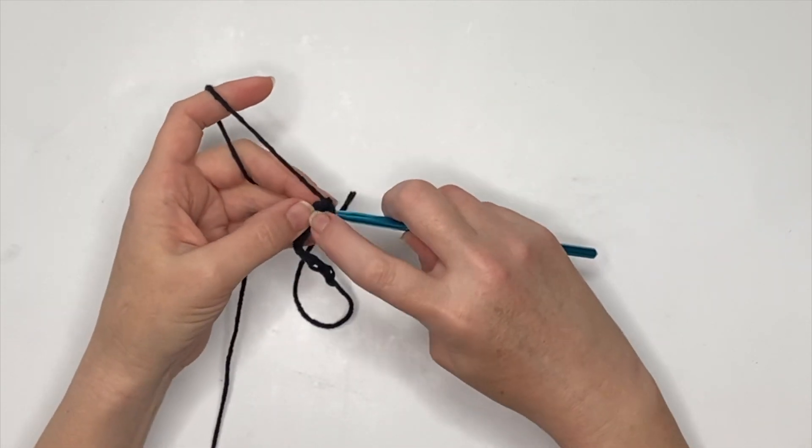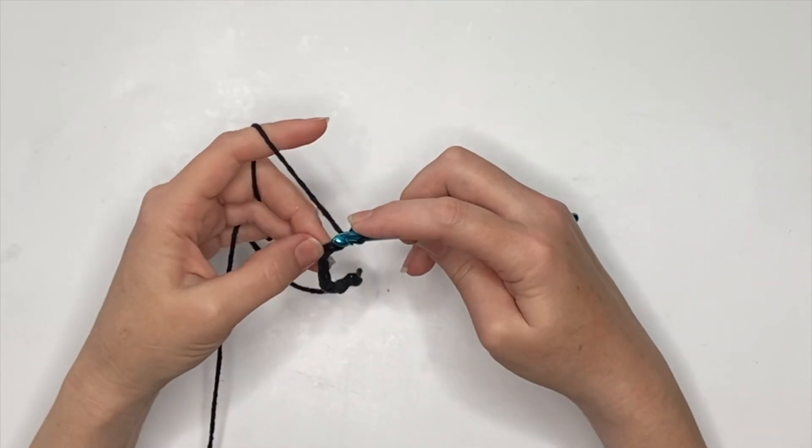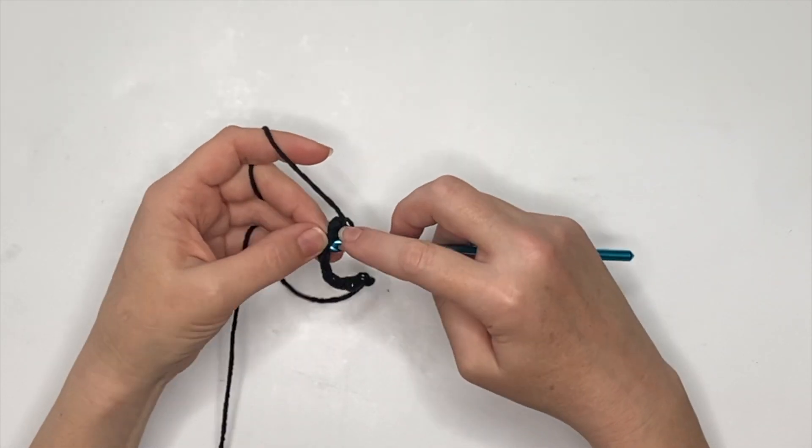Once you've got your chain 10 done, we're just going to single crochet in the second chain from your hook and then single crochet in each of the next eight stitches.